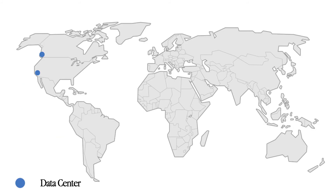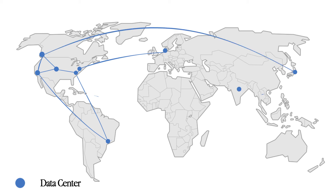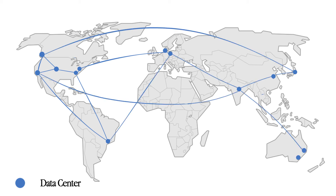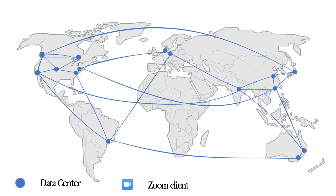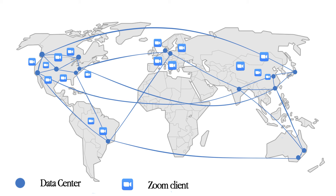Zoom built its distributed cloud-native infrastructure from the ground up. From the beginning, Zoom built geographically distributed data centers globally. They use a network of private links to connect many others. Users can connect to the data center closest to their location, and Zoom servers serve real-time video conferencing in data centers or inside corporate networks.